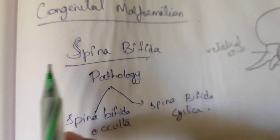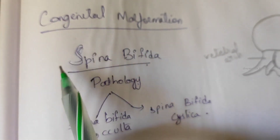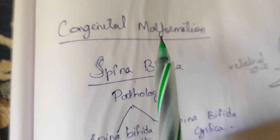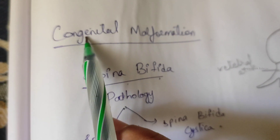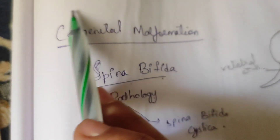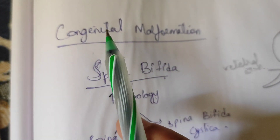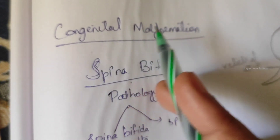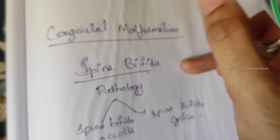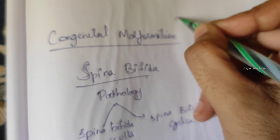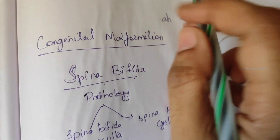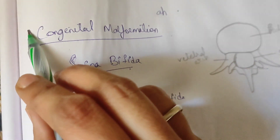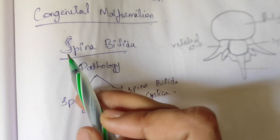Hello people, welcome to my channel Physio Guide by Divya. Today I'm going to teach about spina bifida. It is a congenital malformation — congenital means it is seen from birth. These conditions are called congenital because they result from an intrinsic abnormal developmental process inside the womb.